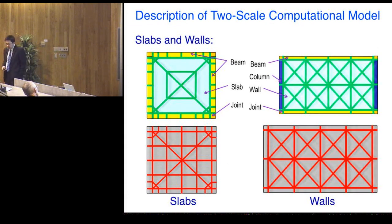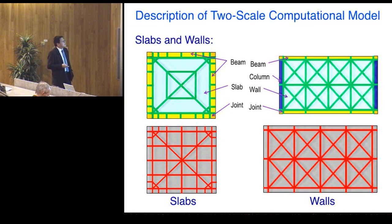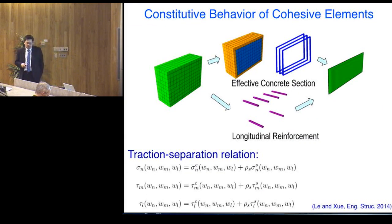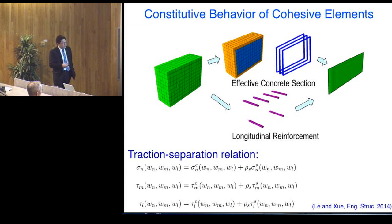For slabs, potential damage zones lie on the yield lines; for walls, we use a strut-and-tie model represented in the cohesive element. To formulate the cohesive element behavior mathematically, we separate the finite damage zone into two parts: the effective concrete section (concrete plus transverse reinforcement) and the longitudinal reinforcement. The traction-separation relation for the cohesive element has two parts: the traction from the effective concrete section and the traction from the reinforcement, weighted by the reinforcement ratio rho.